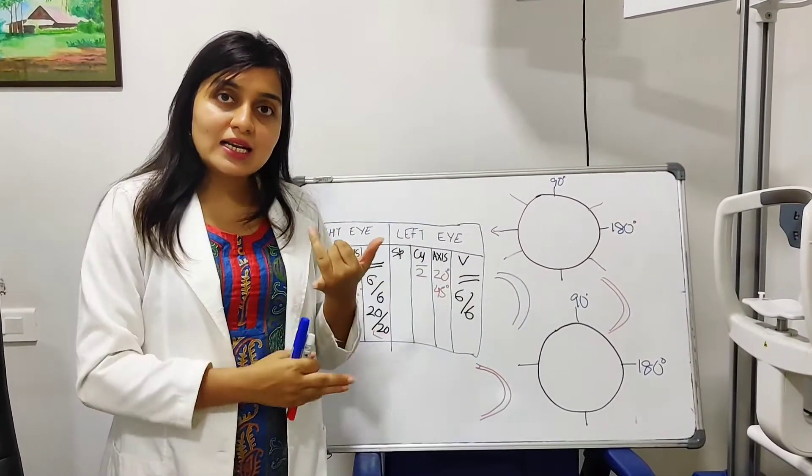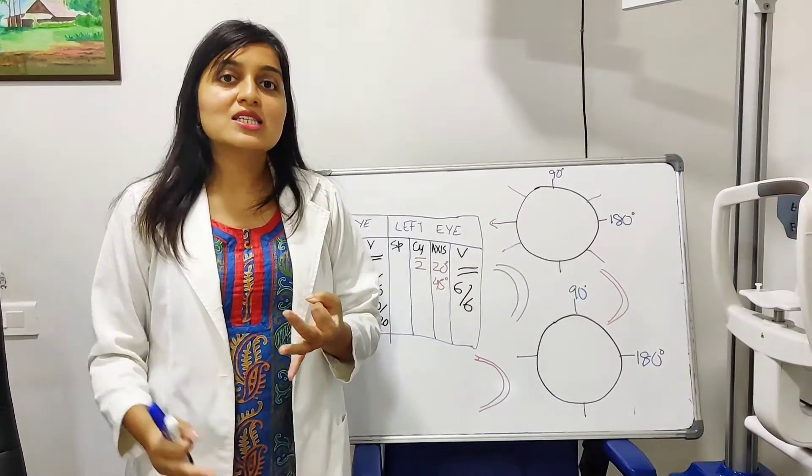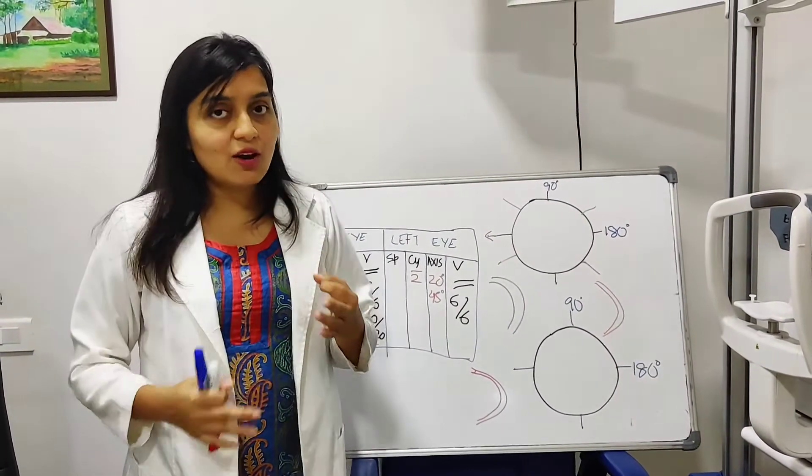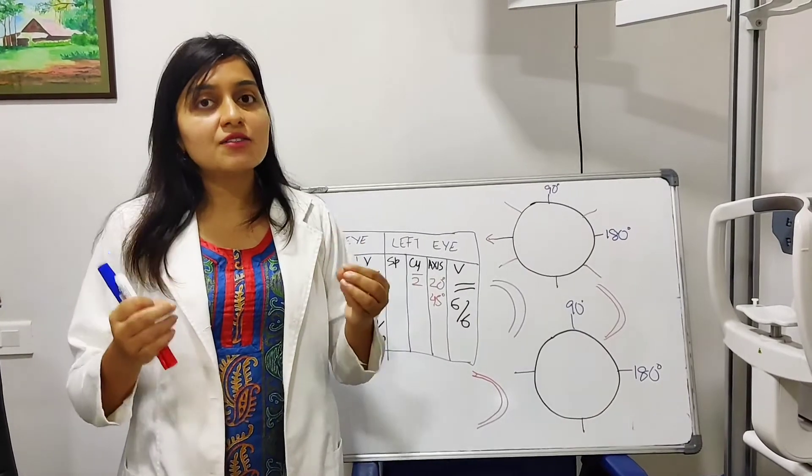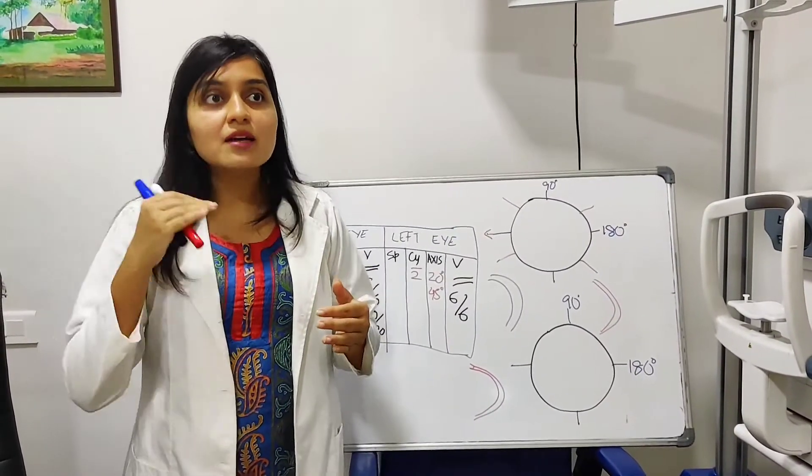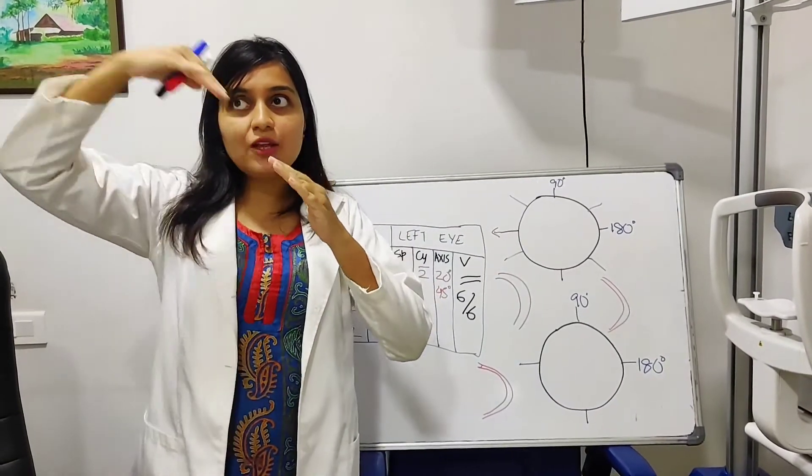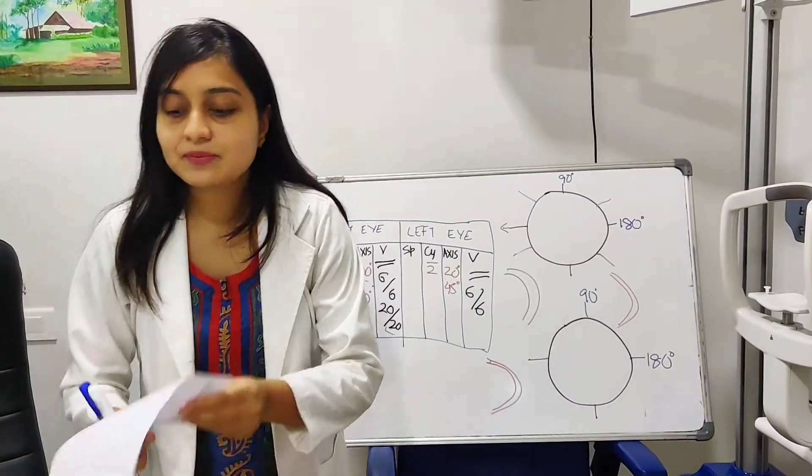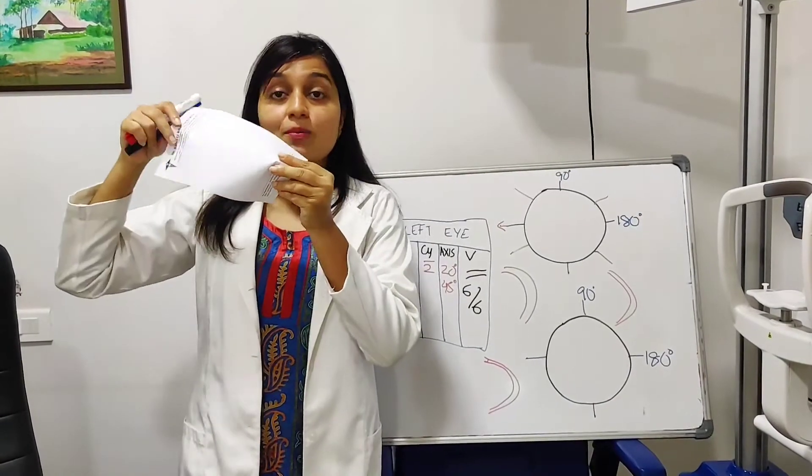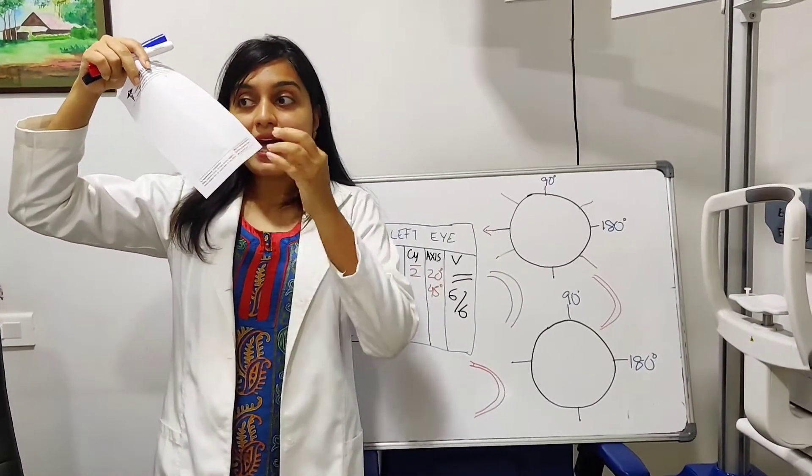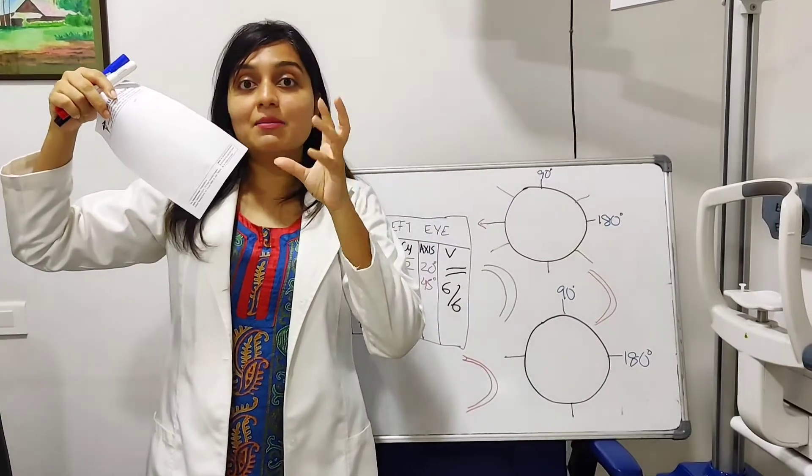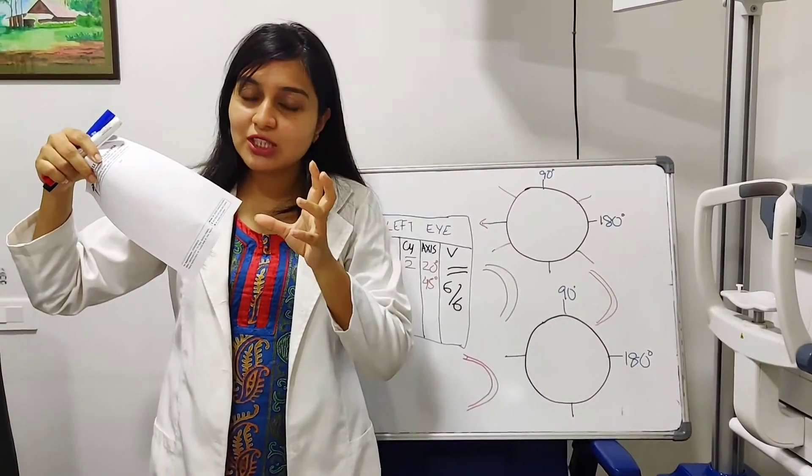It can be treated with glasses, with contact lenses, with laser surgery, any of these three. Yes, we start with spectacles but contact lenses give a better vision than spectacles because the number is like this. So, in oblique astigmatism, imagine, and then they look up, the glasses are unable to change with the eyeball change.